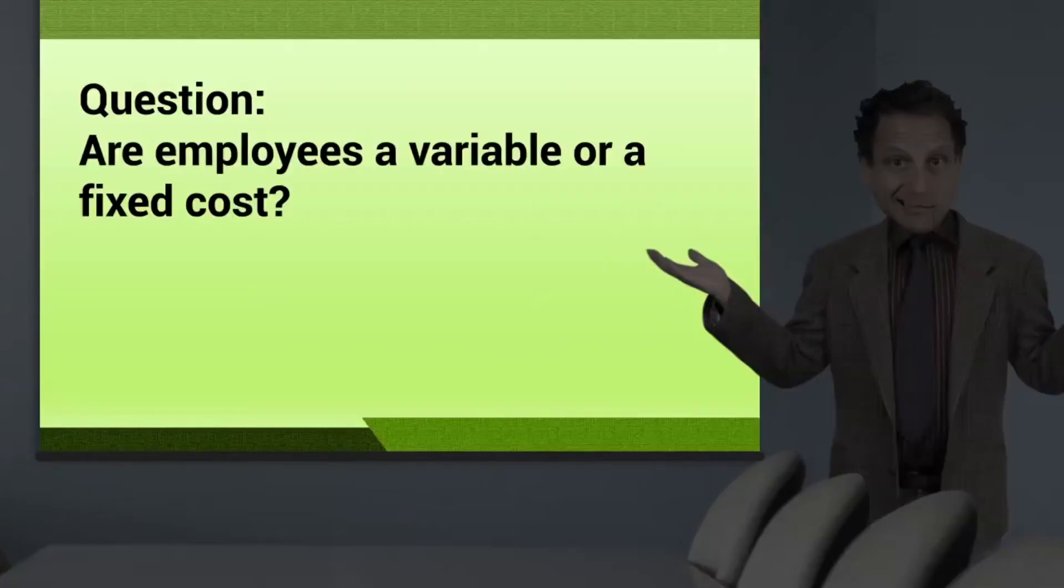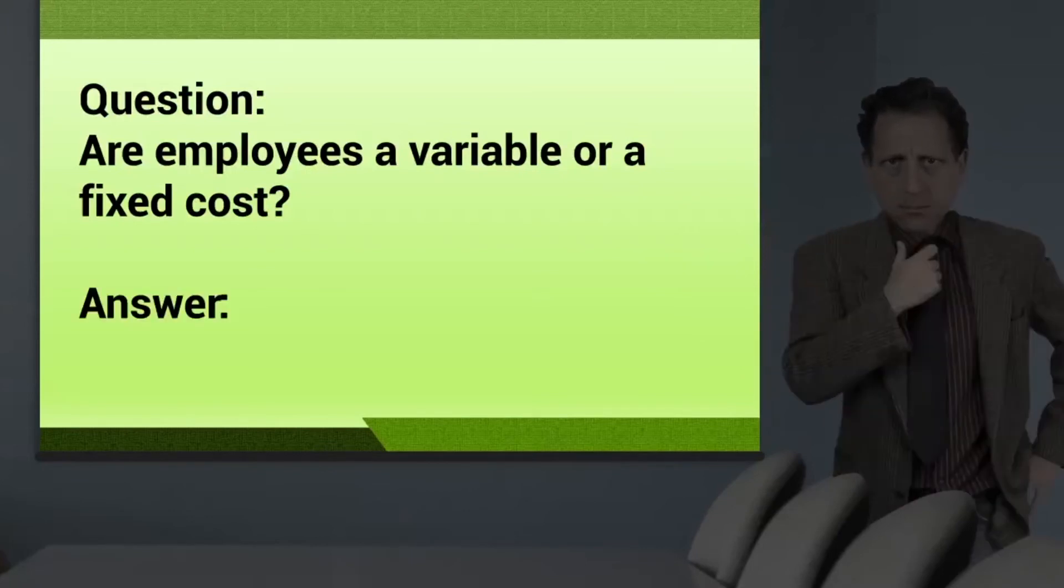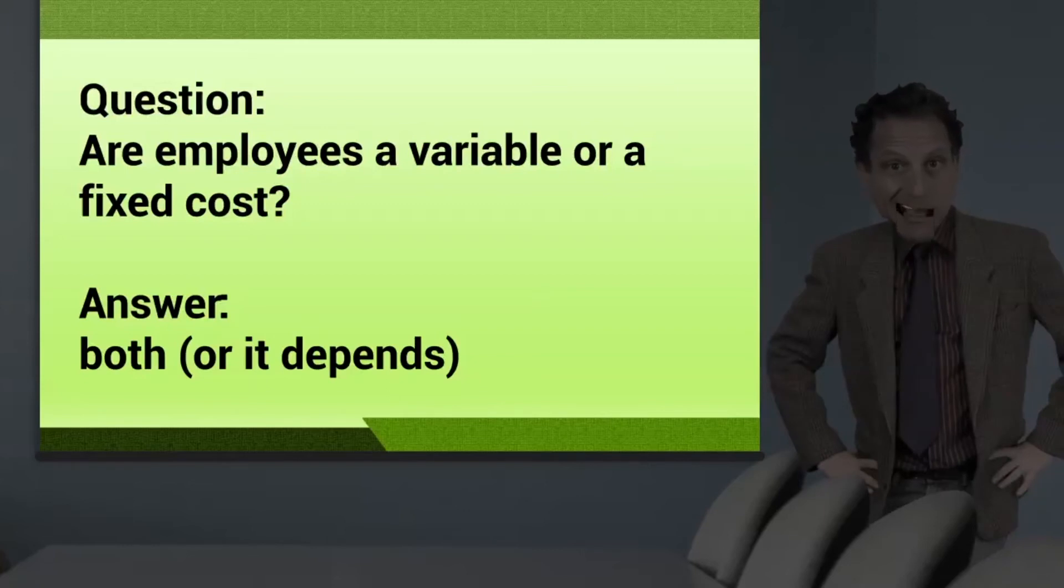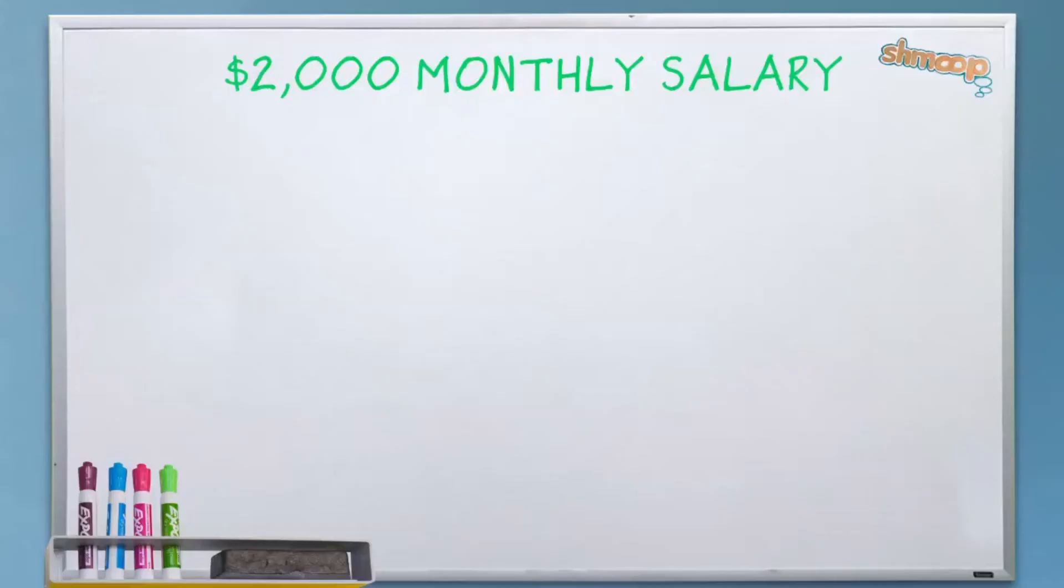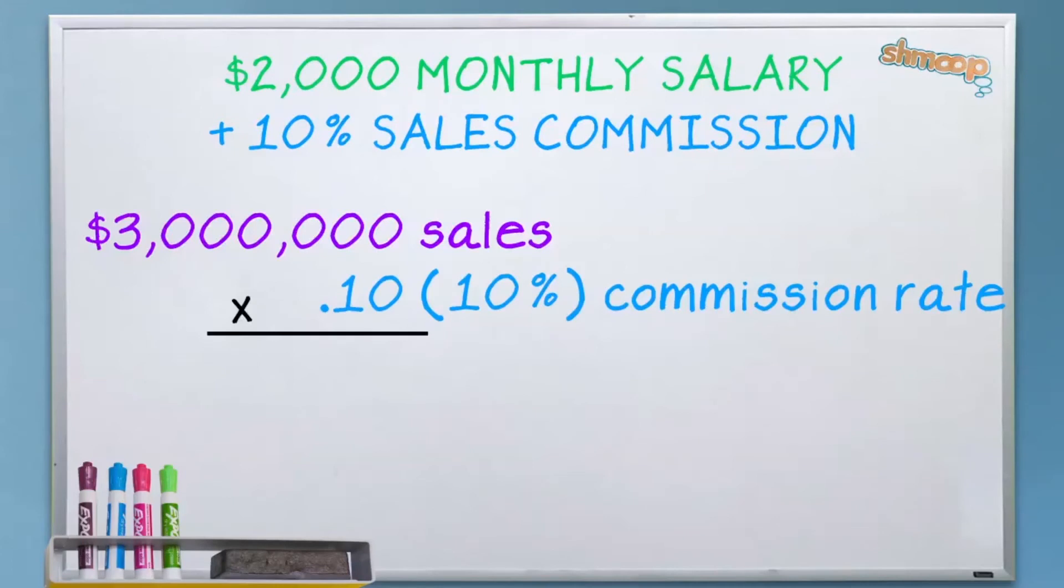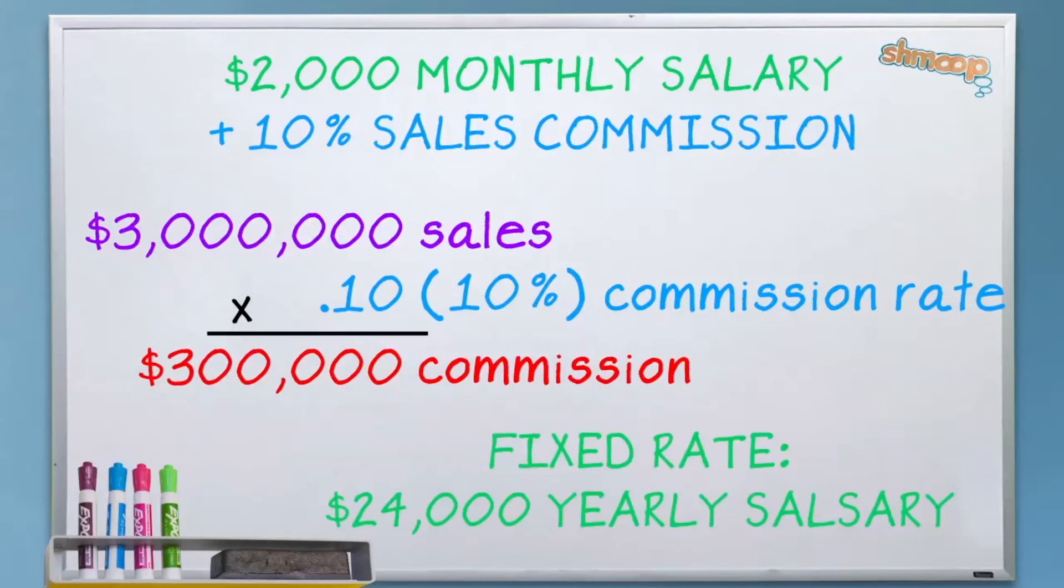Here's a curve ball question: Are employees a variable or a fixed cost? The answer: both, or at least some employees operate that way. Think about a sales rep selling gigabit secure routers to banks with a friendly smile and a tie. She gets a modest base salary, maybe two grand a month, and then she gets 10% of whatever she sells. If she has a big year and sells $3 million worth of routers, then wow, 300 grand in commission for that year's work is her variable cost. That 24 grand a year of base salary was fixed.